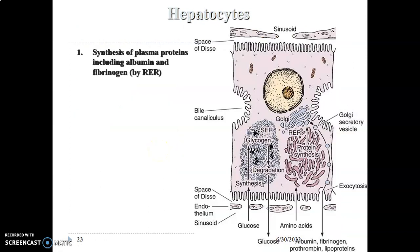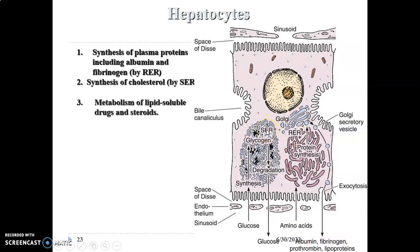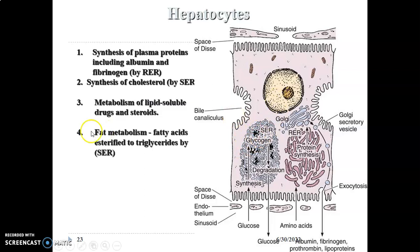Hepatocytes synthesize plasma proteins such as fibrinogen and albumin, so they have abundant rough endoplasmic reticulum. They also synthesize cholesterol, so they have abundant smooth endoplasmic reticulum. They metabolize lipid-soluble drugs and steroids, so they will have abundant peroxisomes. They aid in fat metabolism, so they will have abundant smooth endoplasmic reticulum and cytoplasmic vacuoles.